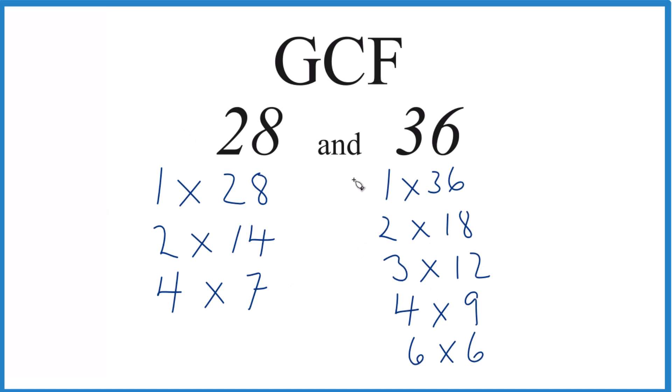So let's find the common ones. 1 goes into 28, 1 goes into 36 evenly. So that's a common factor. 2, that works. 4, we have that. And then it looks like 4 is the greatest common factor that goes into 28 and 36 evenly.